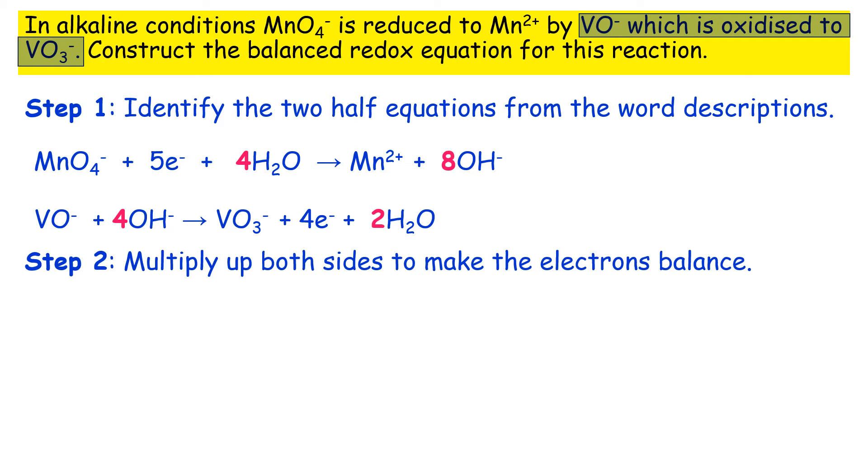So obviously the electrons in the two half equations haven't been balanced. So you need to multiply up. So looking at five electrons and four electrons, the lowest common multiple is 20.